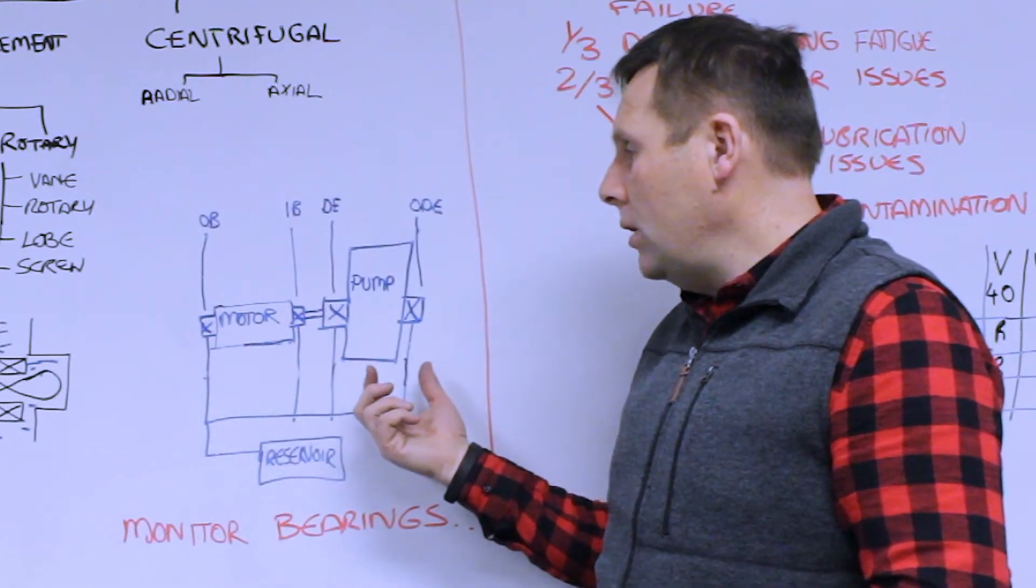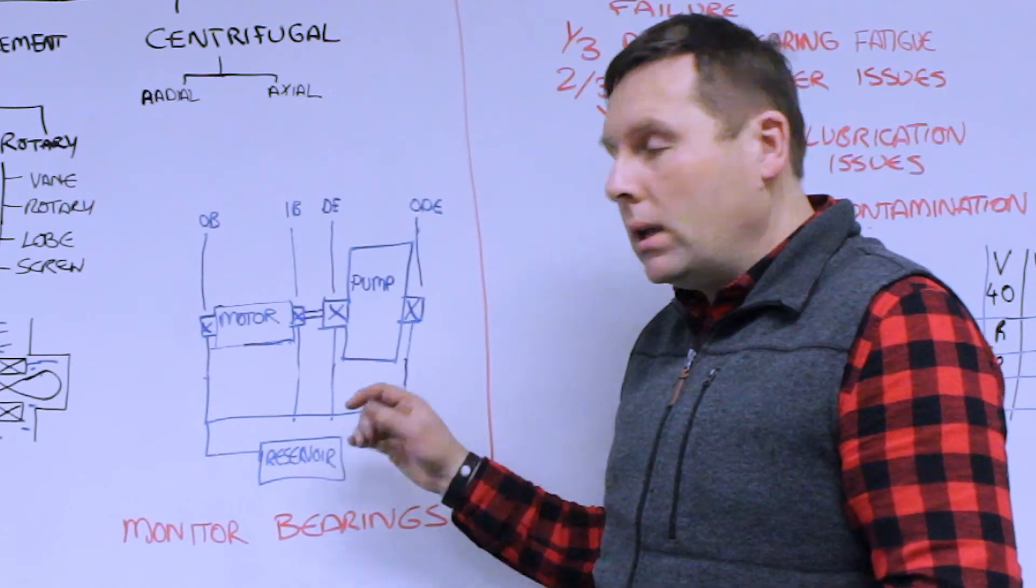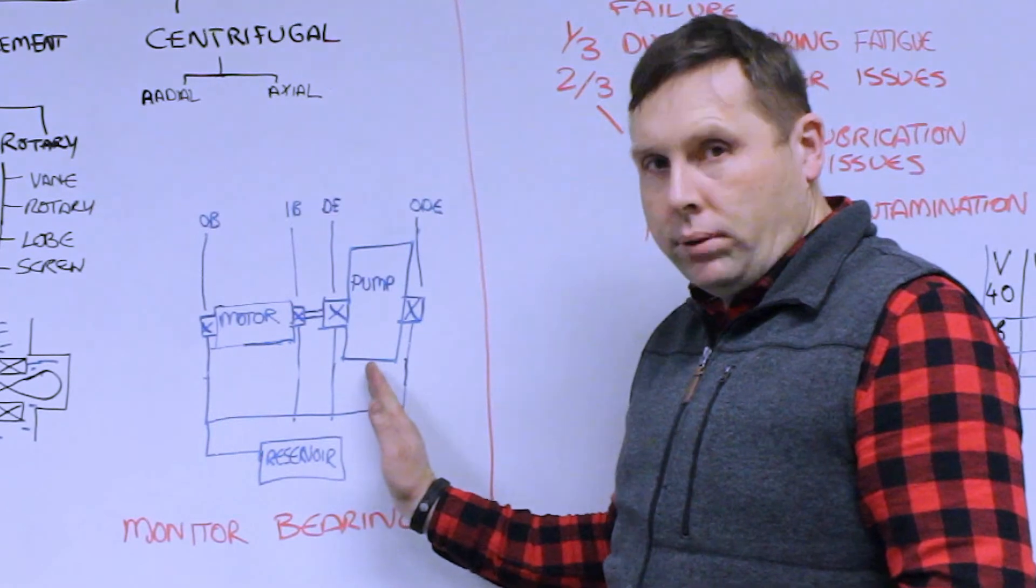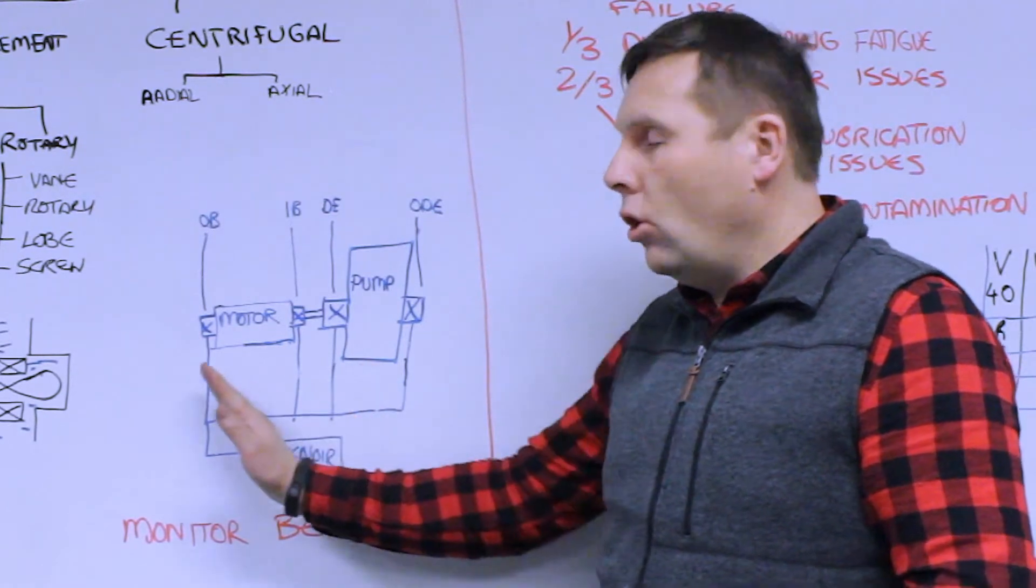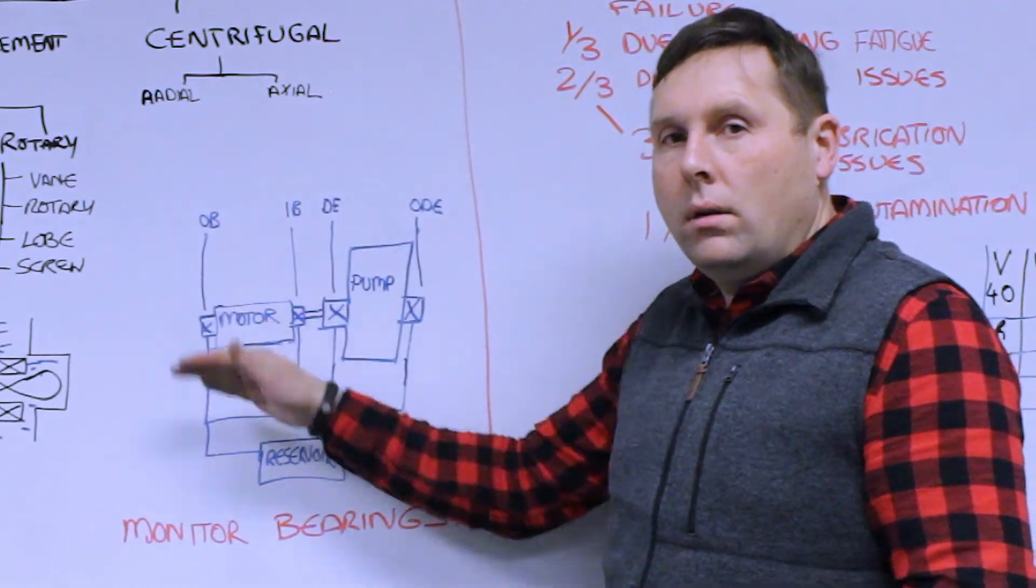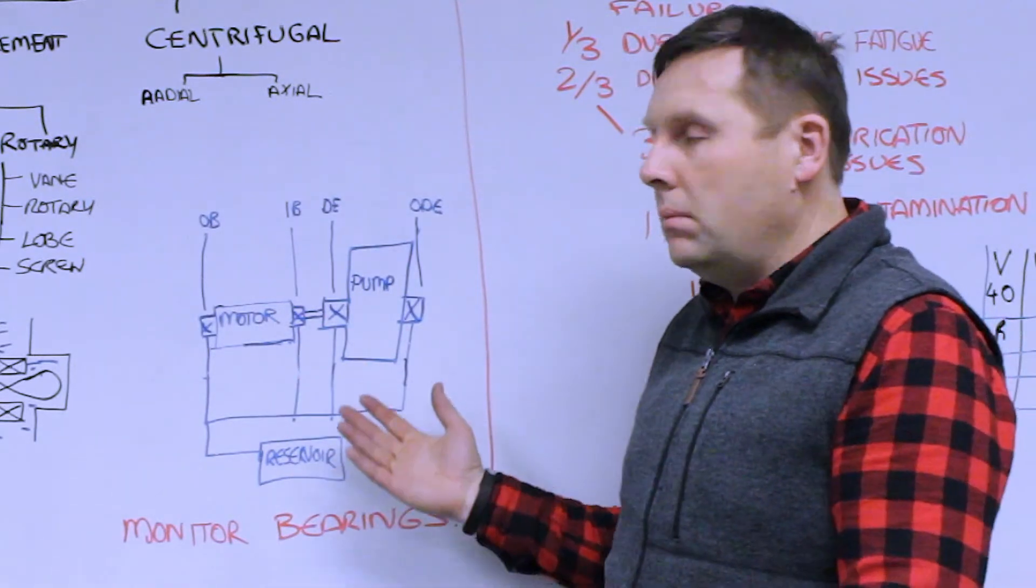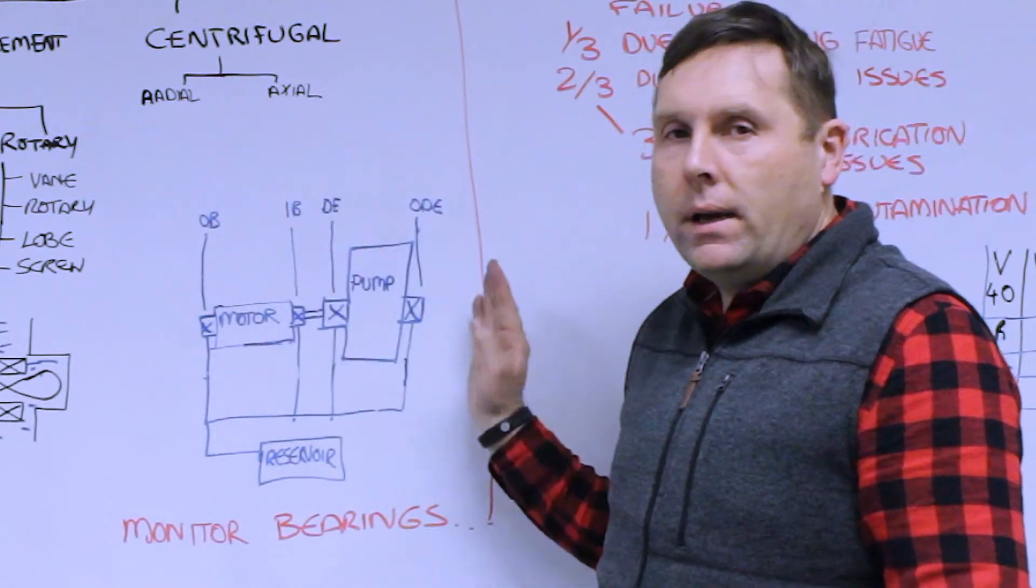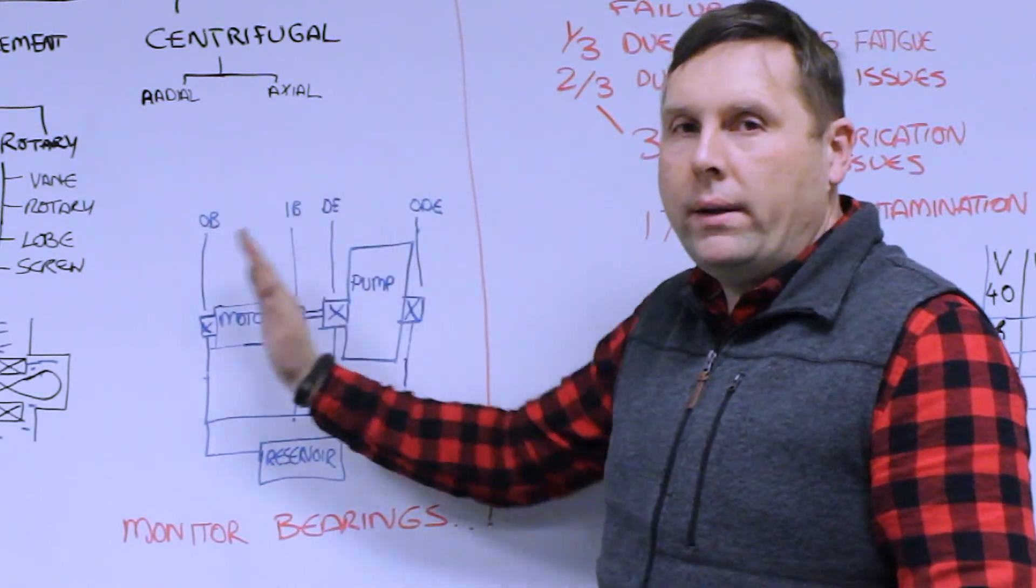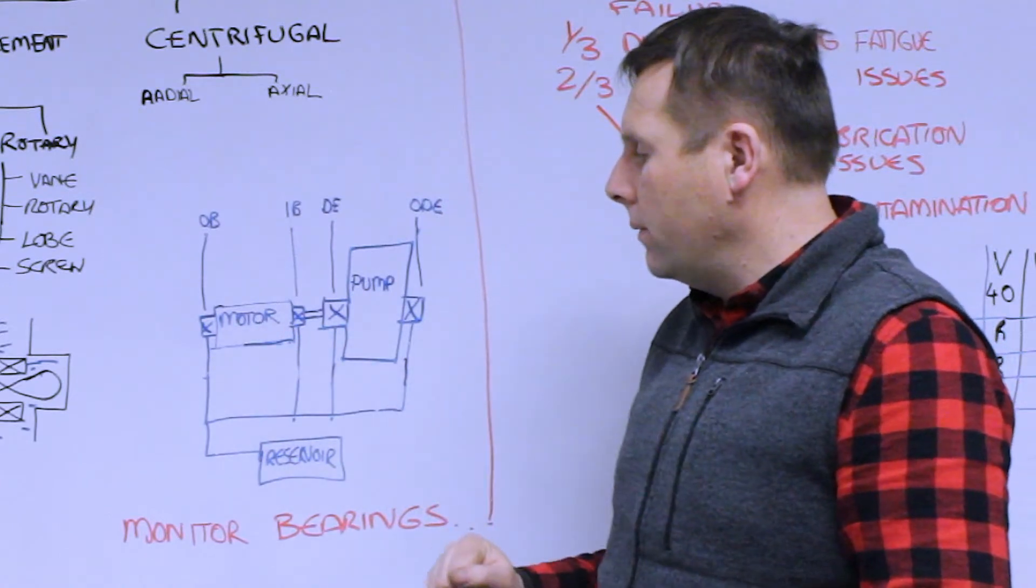In many applications, particularly in refinery and chemical applications, both the driver and the driven product, predominantly a pump, are all in one reservoir. All the bearings are lubricated from the same reservoir, and that can be a variety of different systems identified in different ways. Typically, you'll identify them by the drive vent where it is coming from.